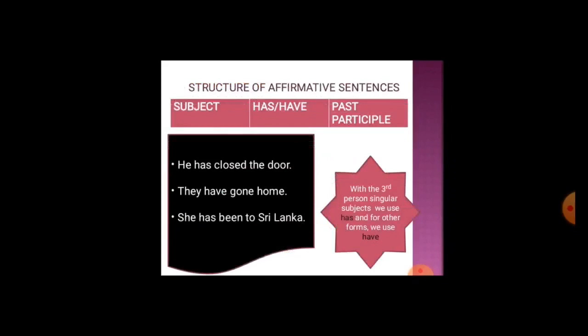Now the structure of affirmative sentences in present perfect tense: subject, then 'has' or 'have', then past participle (third form of verb). For example: he has closed the door; they have gone home; she has been to Sri Lanka. With third person singular subjects we use 'has', and for other plural nouns we use 'have' — he is singular so we use 'has', and they is plural so we use 'have'.